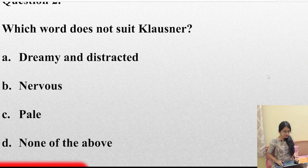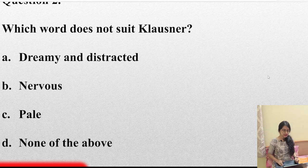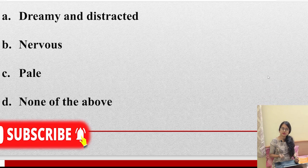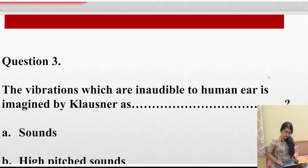Question number 2: Which word does not suit Klossner? Is it dreamy and distracted, nervous, pale, or none of the above? 'Does not suit' is the key here. Dreamy and distracted is obviously a point, nervous is obviously another point, and pale is also another point. So the answer is option D — none of the above.